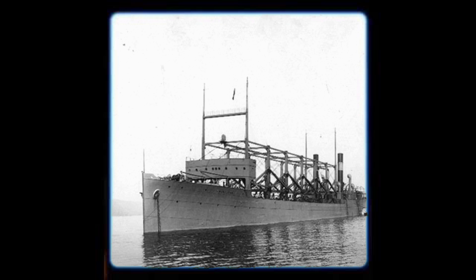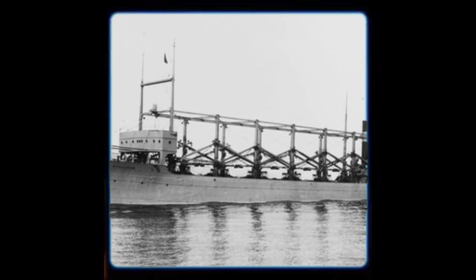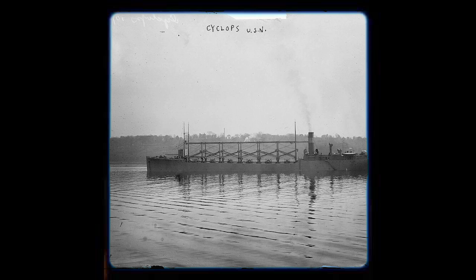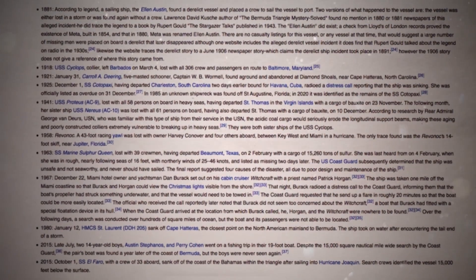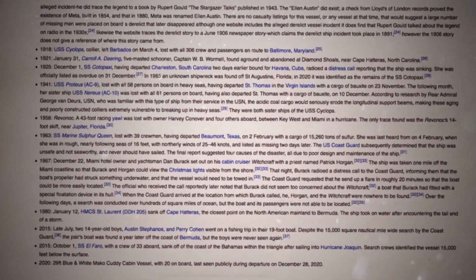It depicts the loss of the USS Cyclops, a Navy supply ship in 1918 and a flight of bombers during a practice run in 1945, as well as one of the search and rescue planes dispatched to find them. At least 50 ships and 20 airplanes have gone missing in this location.